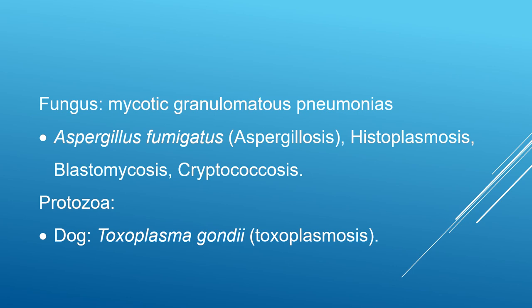Mycotic pneumonia is caused by fungi and produces granulomatous lesions, so it is called granulomatous pneumonia. Common fungi include Aspergillus fumigatus causing aspergillosis, as well as Histoplasma causing histoplasmosis, Blastomyces causing blastomycosis, and Cryptococcus causing cryptococcosis. Protozoa also produce pneumonia in dogs; the important one is Toxoplasma gondii, causing toxoplasmosis.